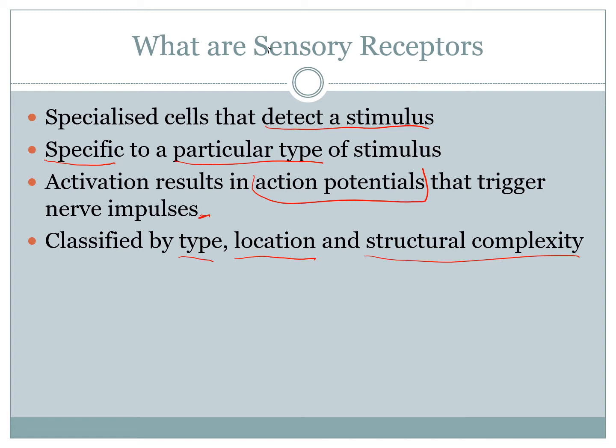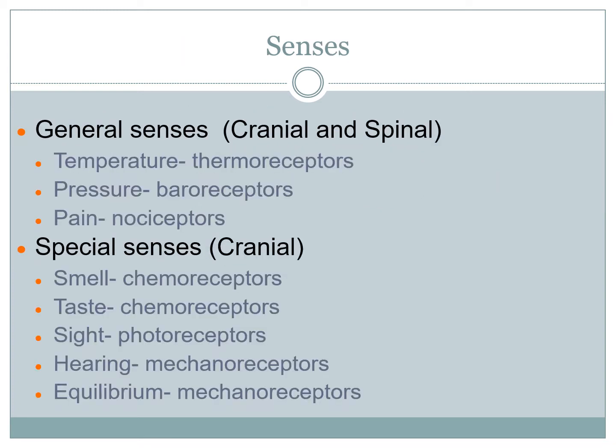General sensors refer to those that are simple and found throughout the body, working in a very linear fashion. Your temperature, pressure, and pain receptors of your skin are general receptors. While they are thermo, baro, and nociceptors and are found throughout the body, they're still classified as general.